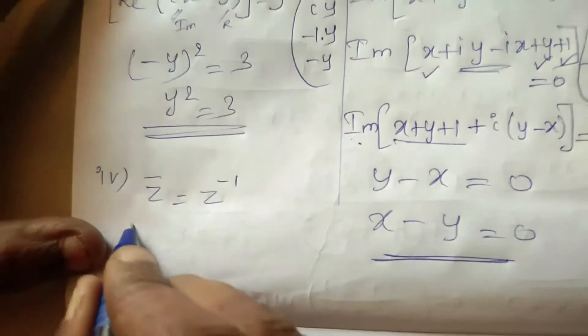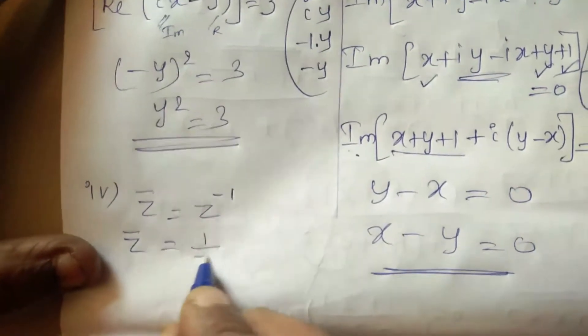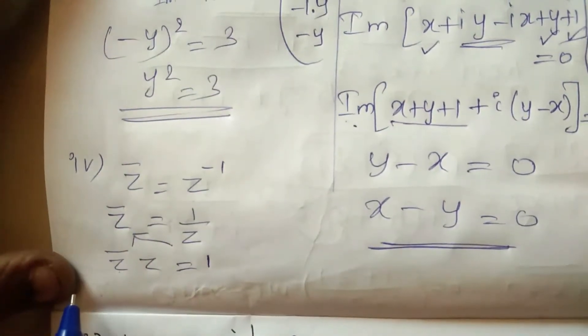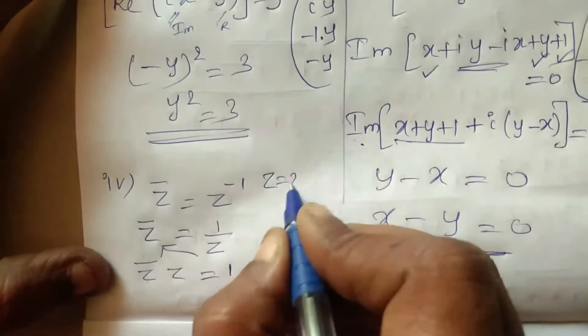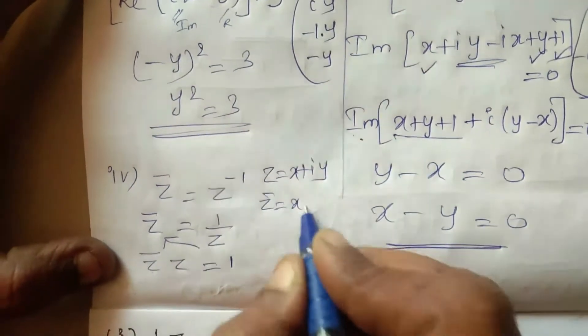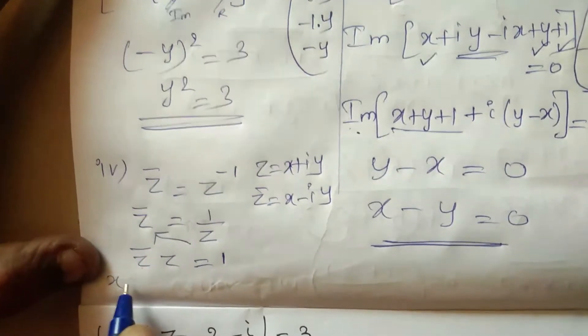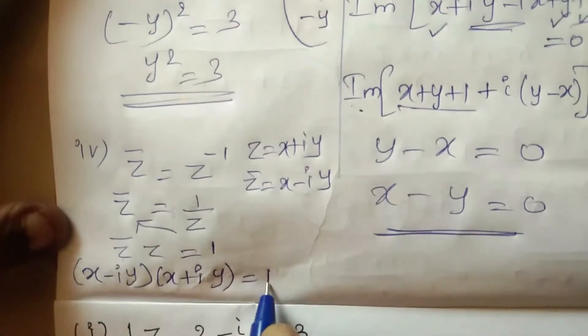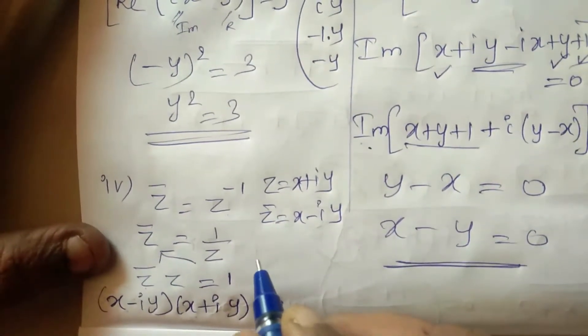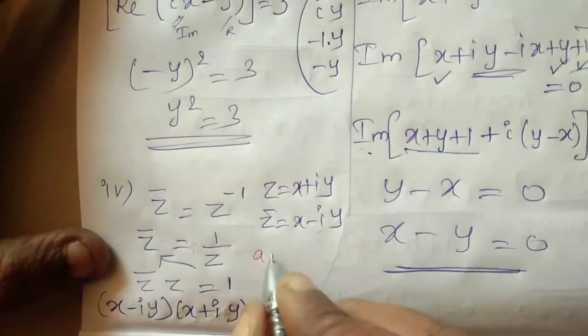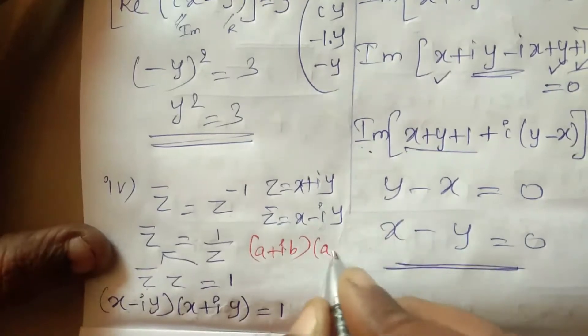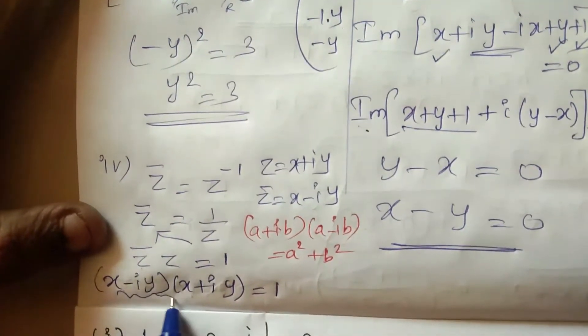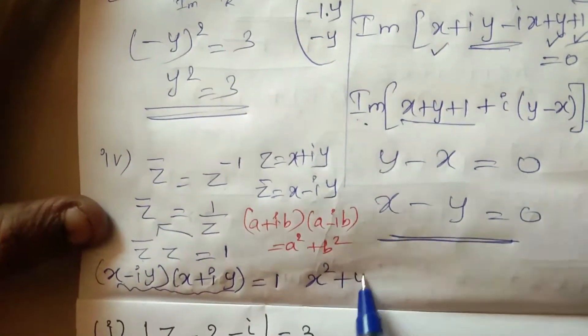Next: Z bar equal to Z inverse. Z bar is equal to 1 over Z. Z bar is equal to X minus Y. A plus B into A minus B is A square minus B square. For complex number A plus IB into A minus IB is A square plus B square.